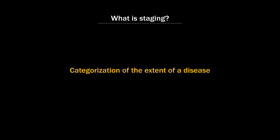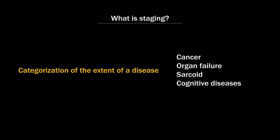So what is staging? Staging is simply categorization of the extent of a disease. Cancer is probably the best example, but there are other very common staging systems — for example, staging systems for heart failure and renal failure. Sarcoid has a staging system ranging from zero to four, and there are even cognitive diseases like dementia that are staged.